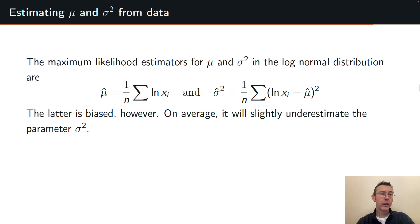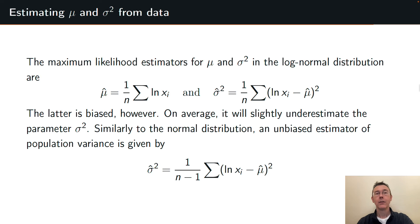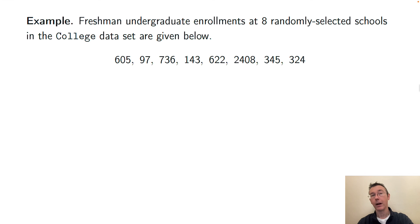Now just like with the normal distribution, that maximum likelihood estimator for σ̂² is biased. It's going to on average slightly underestimate the parameter σ². And so when you're actually trying to get an estimate for σ² for that variance for the population, the normal thing to do is to do a little correction. Instead of having the denominator of n, have a denominator of n minus 1. That gives you an unbiased estimator for that population variance of that underlying normal distribution.